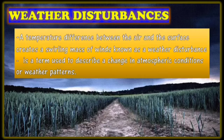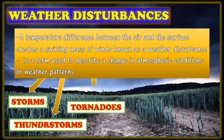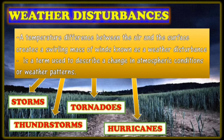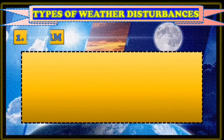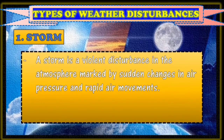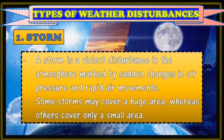The types of weather disturbances are the following: storms, thunderstorms, tornadoes, hurricanes, and tropical cyclones. Number one type is storm. A storm is a violent disturbance in the atmosphere marked by sudden changes in air pressure and rapid air movements. Some storms may cover a huge area, whereas others cover only a small area.